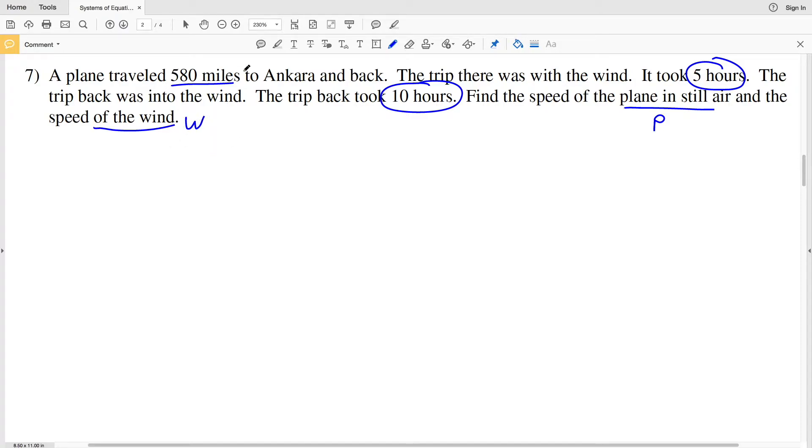So it states that the plane traveled 580 miles to Ankara and then back. So 580 miles is the length of one trip. And if the trip there took 5 hours, we're going to take 5 hours and we're going to be multiplying that by the speed of the plane plus the speed of the wind, which will be in miles per hour. And the trip back took 10 hours, so we're going to be multiplying that by the speed of the plane minus the speed of the wind, because the wind was working against the plane on that trip back. Now, we can use either elimination or substitution to solve, and I'll go ahead and use elimination. But first, let's distribute both the 5 and the 10.